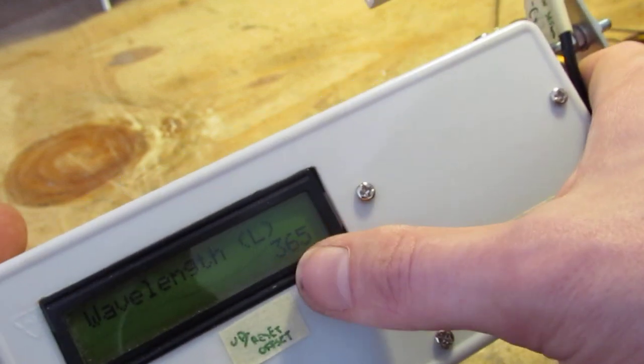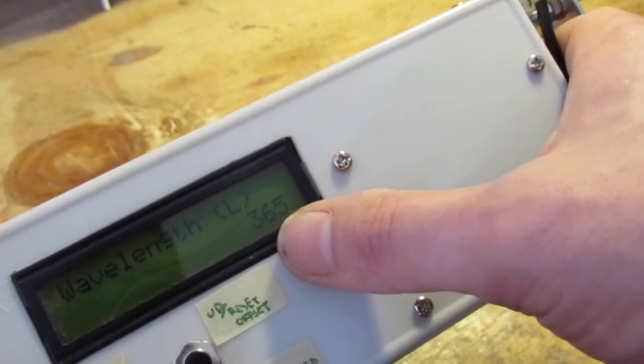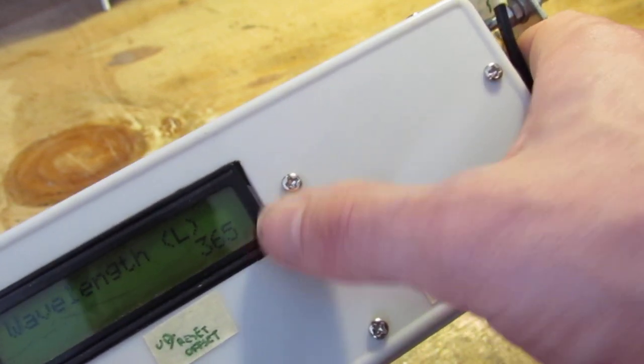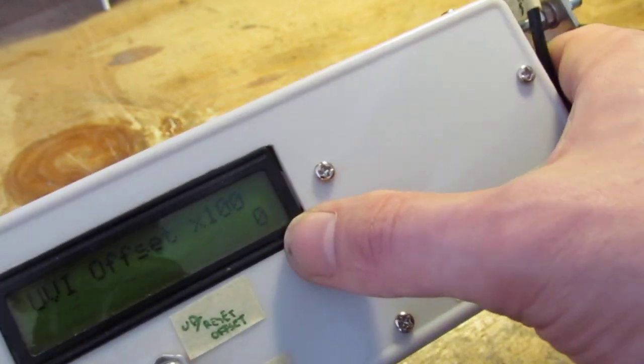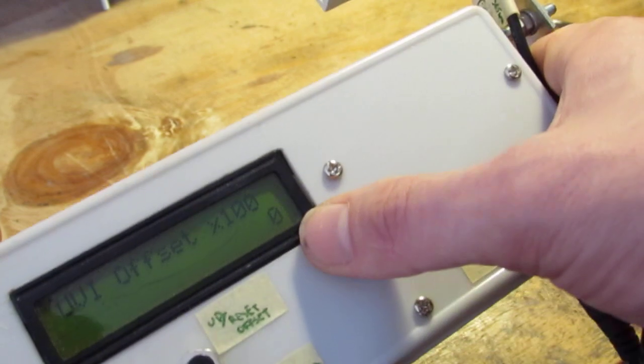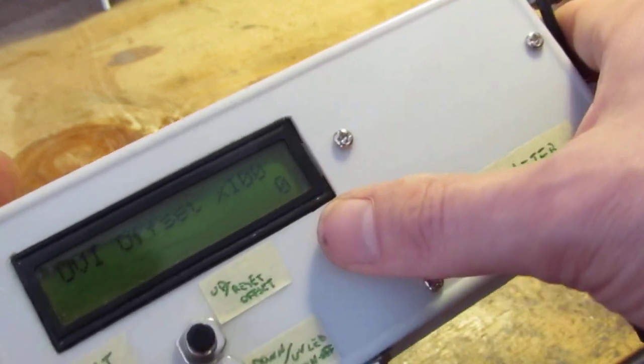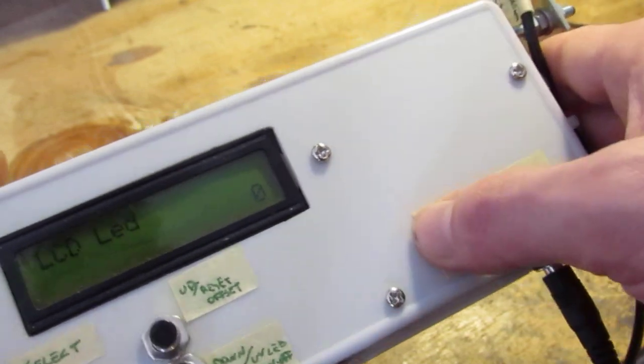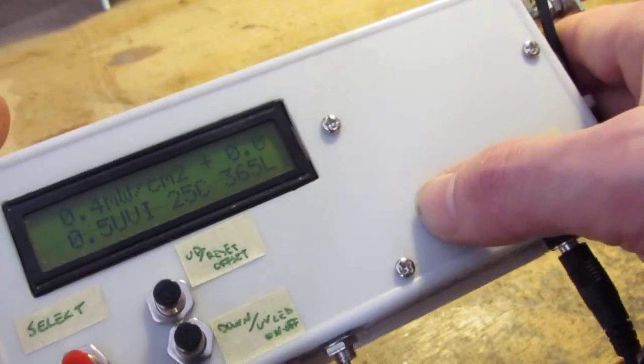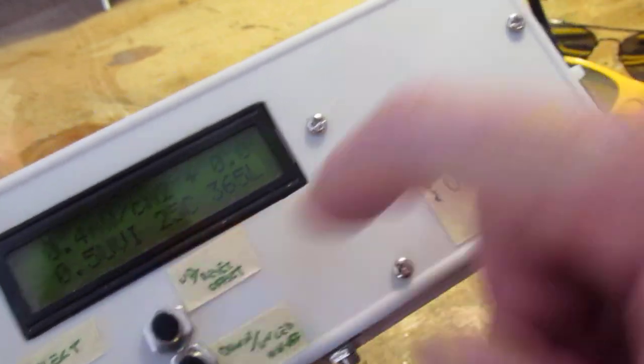And here I can select the wavelength we are using, the UV wavelength, and the UV index offset if I calibrate this against a calibrated meter. Then I long press to come back to the main screen.